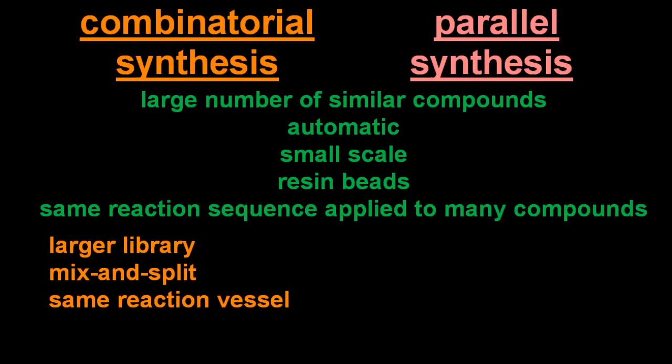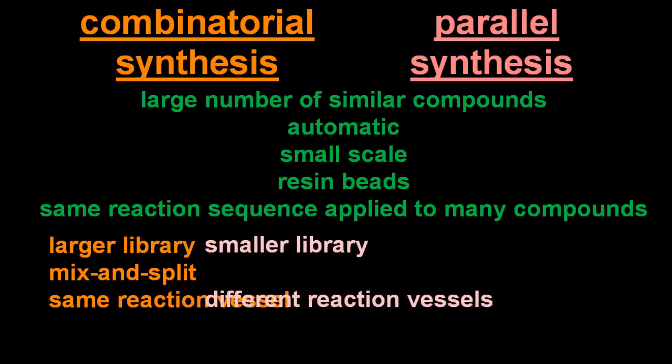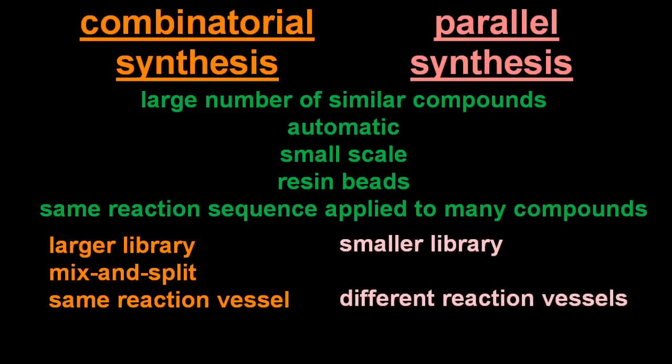And if they ask you to contrast the processes, combinatorial makes a larger library than parallel. Combinatorial is mix and split in the same reaction vessel. Even though that sounds confusing, that's their answer. And parallel synthesis is in different reaction vessels.